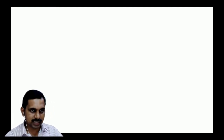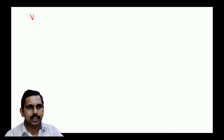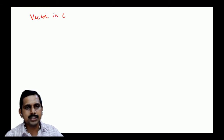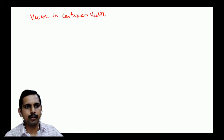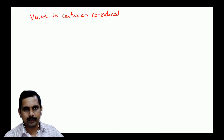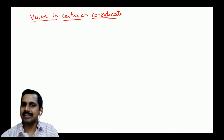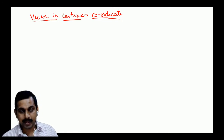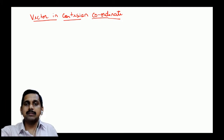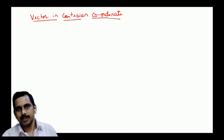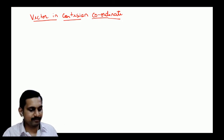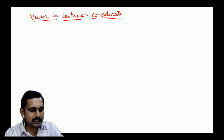Now let us define vectors more precisely. In Cartesian coordinates, it is very simple. One key principle: we must repeat what we know before we can understand what we do not know. A common mistake is jumping to advanced topics without understanding the basics.